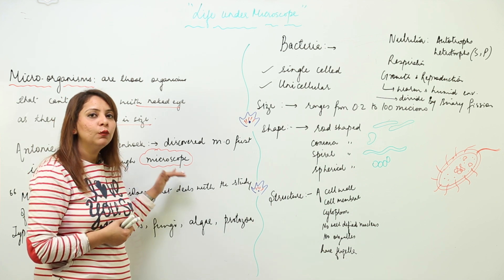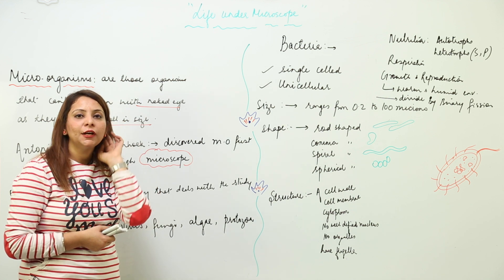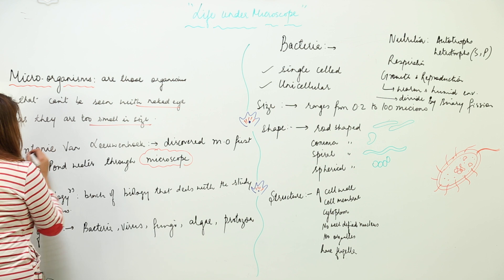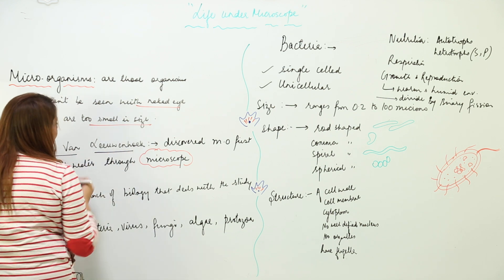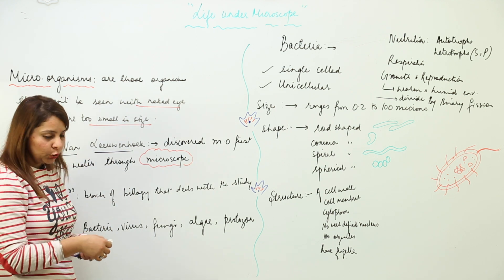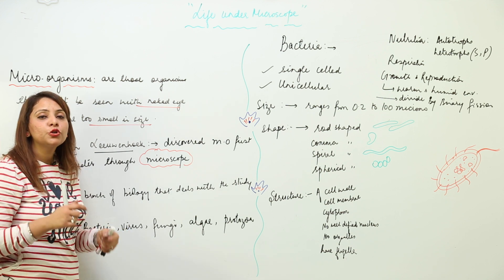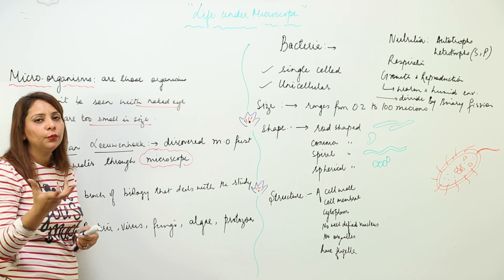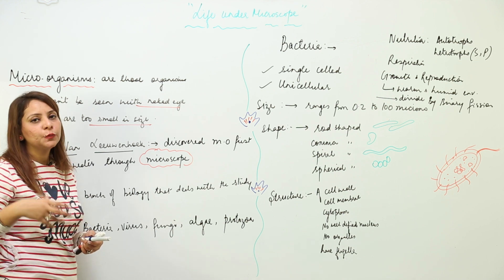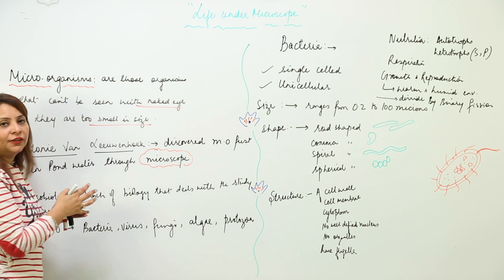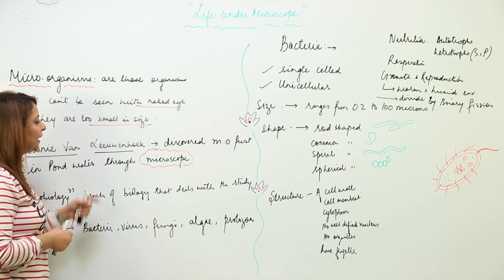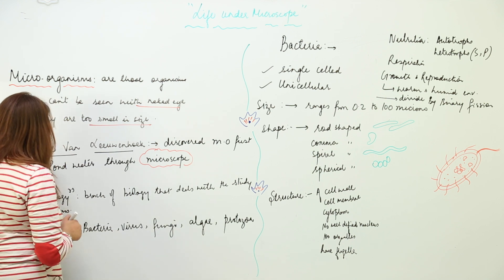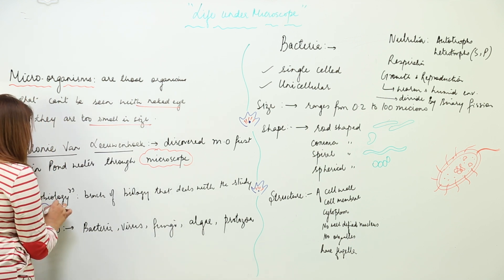The one who actually looked for microorganisms for the first time was none other than Anton van Leeuwenhoek. He was the one who discovered the microscope, and he was the one who visualized the first microorganism in a drop of water from a pond. So Leeuwenhoek is the discoverer of both microscopes and these tiniest organisms.